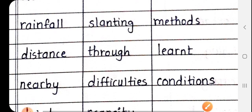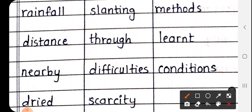Next, rainfall. R-A-I-N-F-A-L-L, rainfall matlab barish. Next, distance. D-I-S-T-A-N-C-E, distance matlab duri, yafir antar. Next is nearby. Nearby. N-E-A-R-B-Y, nearby matlab pass he.